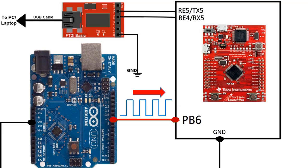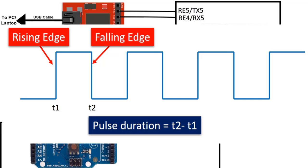For example, by measuring the time difference between the rising and falling edge of any PWM signal, we can measure its pulse width or pulse duration.